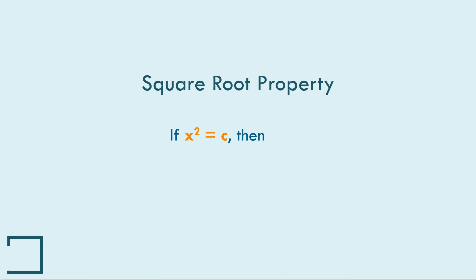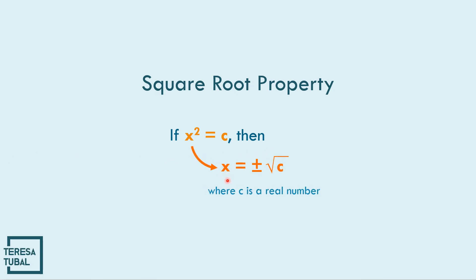What is the square root property? If x squared is equal to c, then x is equal to positive or negative square root of c, where the value of c is a real number.